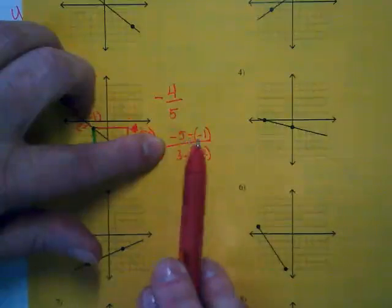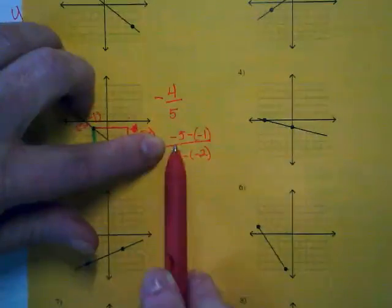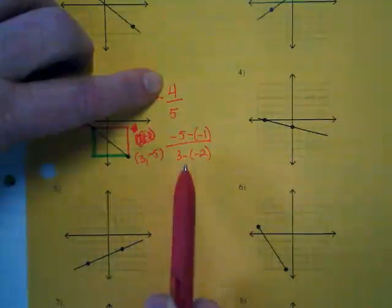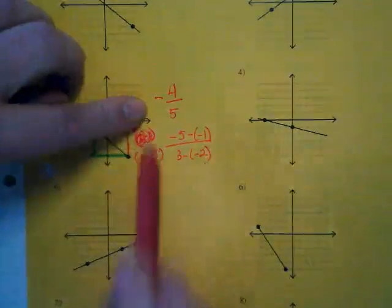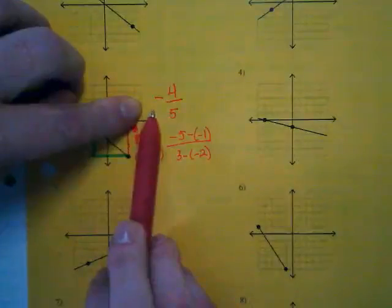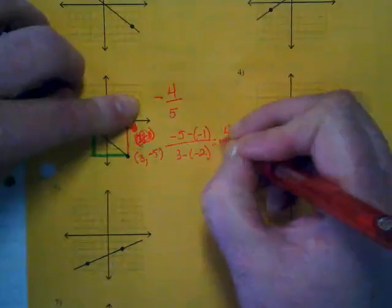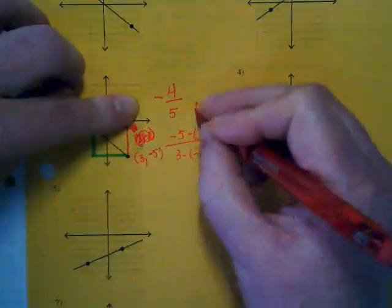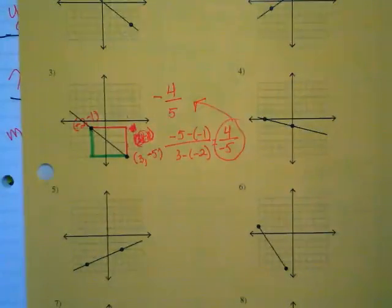If I have a negative minus negative one, that's going to turn into a positive. So negative five plus one is negative four. And three minus negative two is going to be positive five. That's where the negative sign came from. This equals positive four over negative five, and we rewrite that as our slope - the whole thing is negative because we get a negative line.